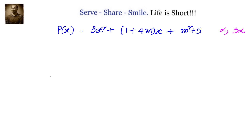P(x) is given by 3x² + (4m+1)x + (m²+5). The zeros of the polynomial are such that one zero is one third of the other. So we have taken them as alpha and 3 alpha. We have to find out the value of m.